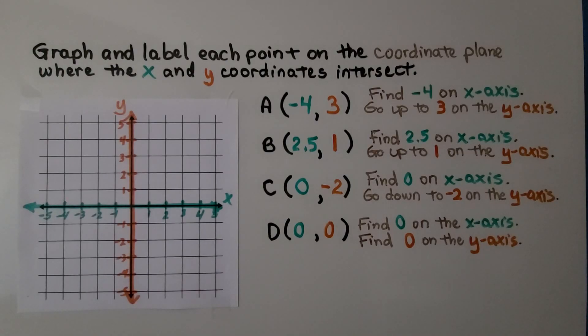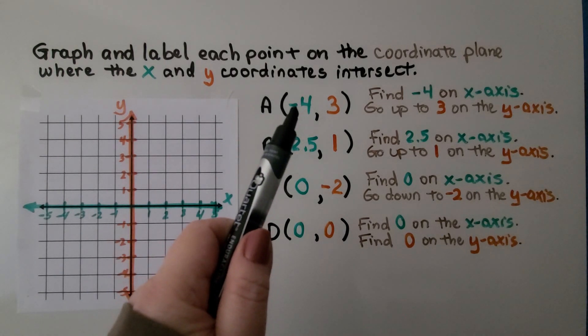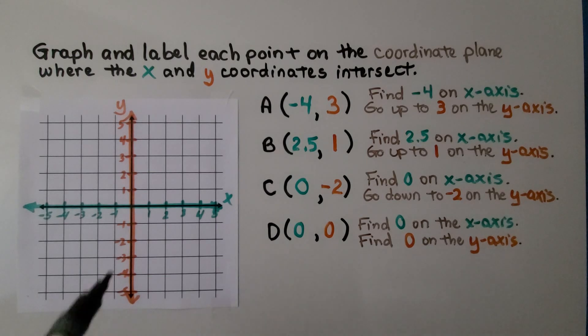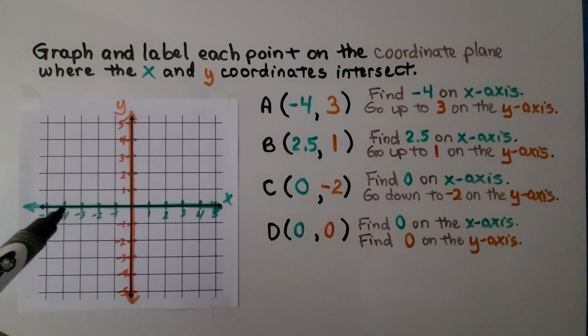Here it's telling us to graph and label each point on the coordinate plane where the x and y coordinates intersect. We have point A, which is at negative four for x and three for y. So here's zero on x. Here's negative four.